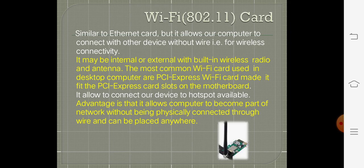The next one is the Wi-Fi card. It is similar to an Ethernet card but allows our computer to connect with other devices without a wire — that is, for wireless connectivity. It may be internal or external with a built-in wireless radio or antenna. The most common Wi-Fi card used in desktop computers is the PCI Express Wi-Fi card, which fits into the PCI Express card slot on the motherboard. It allows connecting to available hotspots and enables computers to become part of a network without being physically connected through wire, and can be placed anywhere.